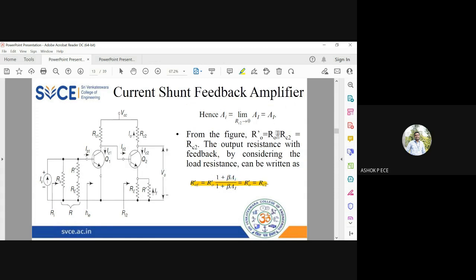R naught dash equal to r naught parallel to rc2. You know r naught is infinity. Anything parallel to infinity is that resistance, so r naught dash equal to rc2. You can get the expression for r naught dash equal to r, and r naught f dash will be equal to the expression. You can simplify and get the answer for r naught f dash.